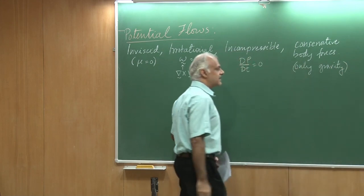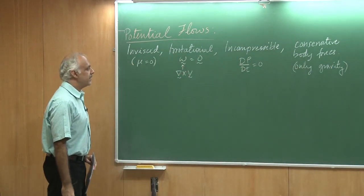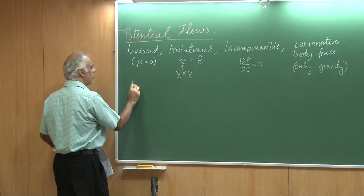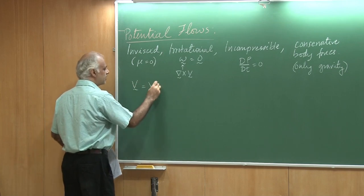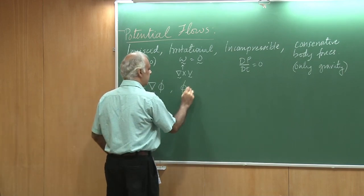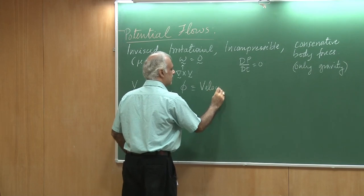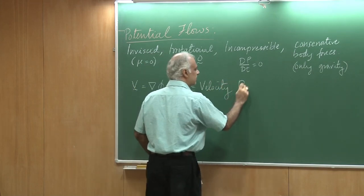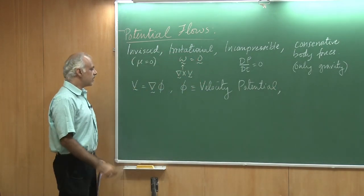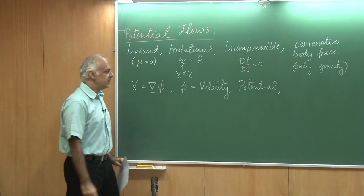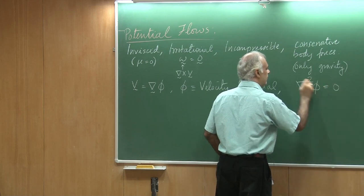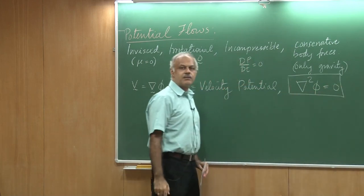If we make these assumptions, then what we have shown is that the velocity can be expressed as a gradient of a potential. This phi corresponds to the velocity potential. The governing equation for such flows is simply the Laplacian of phi equal to zero, with the relevant boundary conditions.